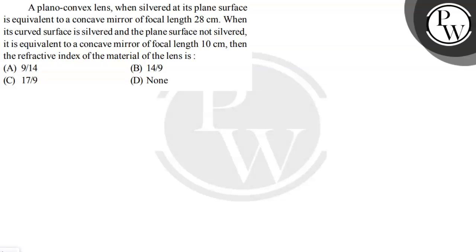The question is: a plano-convex lens, when silvered at its plane surface, is equivalent to a concave mirror of focal length 28 cm. When its curved surface is silvered and the plane surface not silvered, it is equivalent to a concave mirror of focal length 10 cm. Find the refractive index of the material of the lens.